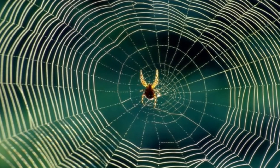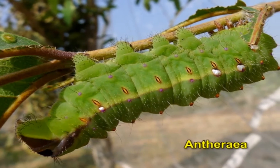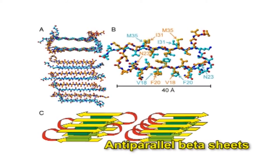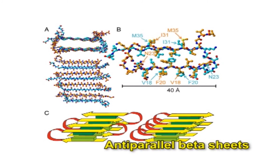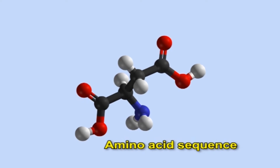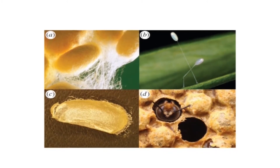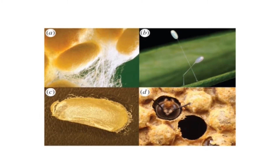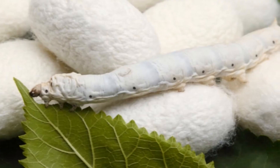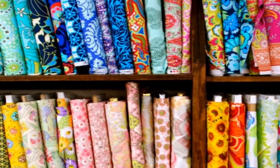Fibroin is an insoluble protein created by spiders, the larvae of Bombyx mori, other moth genera such as Antheraea, Cricula, Samia and Gonometa, and numerous other insects. The fibroin protein consists of layers of anti-parallel beta sheets. Its primary structure mainly consists of a recurrent amino acid sequence. The high glycine content allows for tight packing of the sheets, which contributes to silk's rigid structure and tensile strength. A combination of stiffness and toughness makes it a material with applications in several areas including biomedicine and textile manufacture.